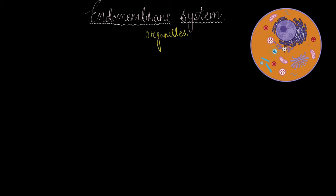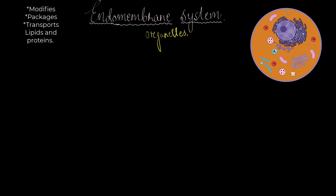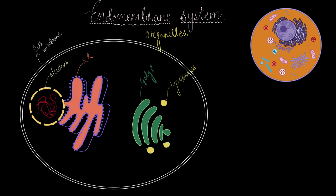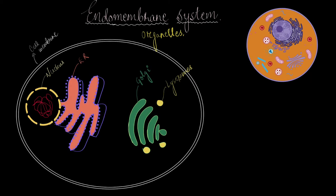Why only a selected few? The simple answer is that the membranes of a few of these organelles interact with each other in order to complete a particular task, and typically that task is either modifying, packaging, or transport of lipids and proteins. We will see how that is done in a minute. The word 'endo' means inside, so we talk about membranes that are inside the cell — the membranes of the organelles.